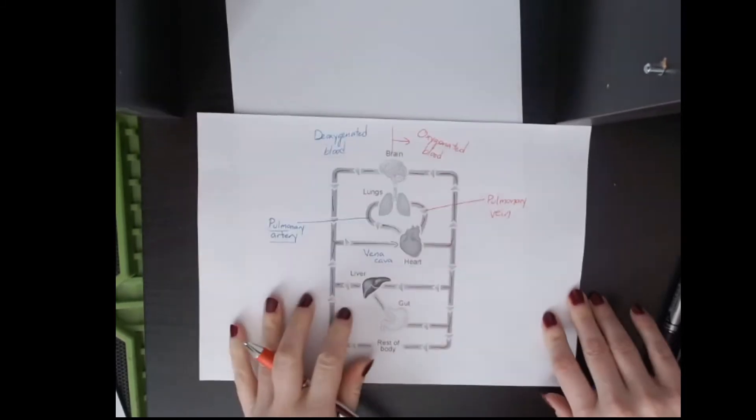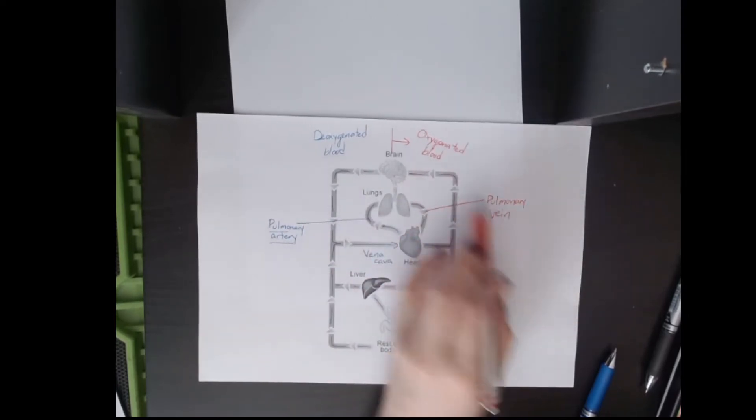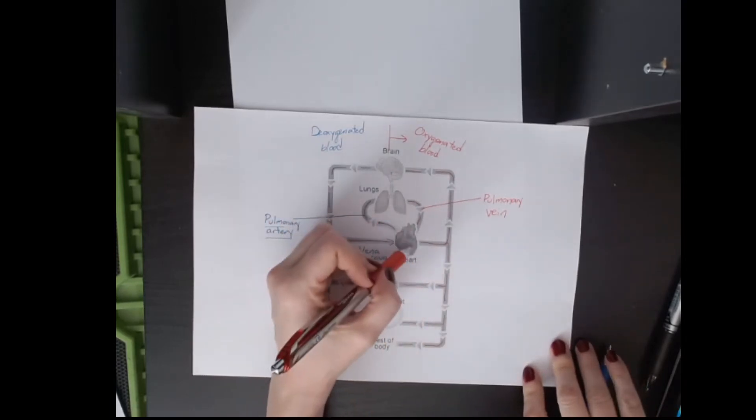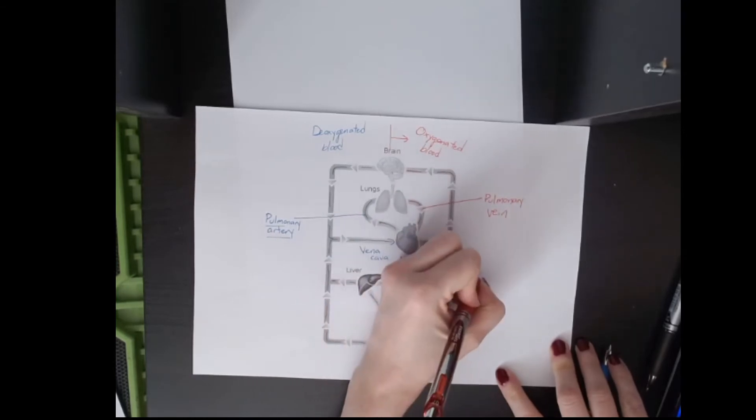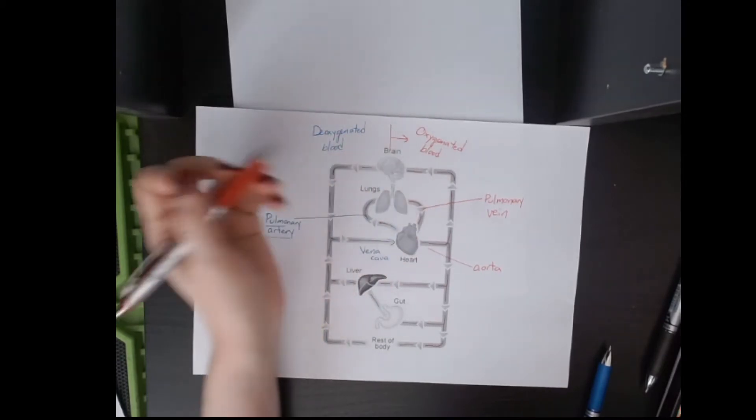And like I said, arteries usually carry oxygenated blood, veins usually carry deoxygenated blood. These are the two exceptions. The pulmonary vein is carrying oxygenated blood. Then the blood leaves the heart and it goes off to the body. And so this is the aorta. The pulmonary vein takes blood into the left atrium, then the left ventricle, and then leaves via the aorta.